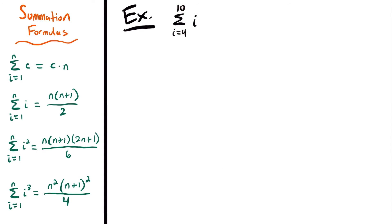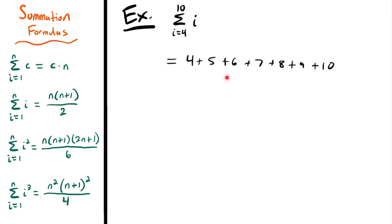Next we have the summation from i equals 4 to 10 of i. Notice what's different: this sum starts at i equals 4, not i equals 1 like all of our formulas do. That means we can't use these formulas for this sum in its current state. Let's think about what we're summing — we're adding up the numbers from 4 through 10: 4 plus 5 plus 6 plus 7 plus 8 plus 9 plus 10. That would be the easiest way to figure out the answer, but if you're told to use summation formulas, it's trickier.